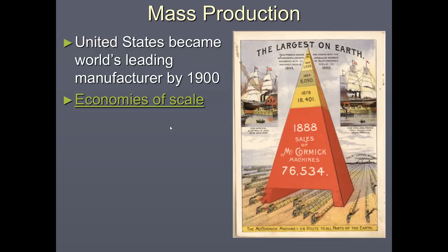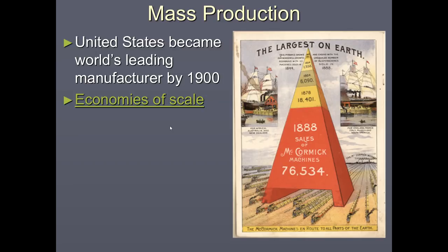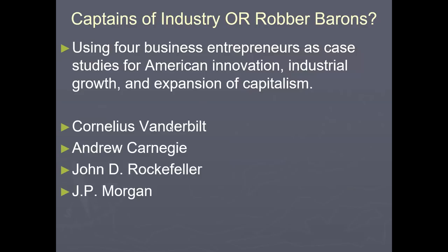As mass production entered the United States, the assembly line emerged, which led to things like the Model T car. The benefits of the assembly line were that it made products cheaper and produced more products, which ultimately dropped the cost.